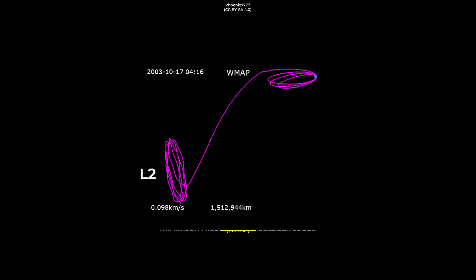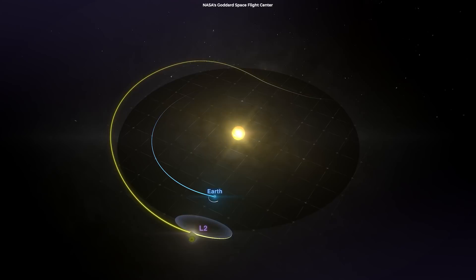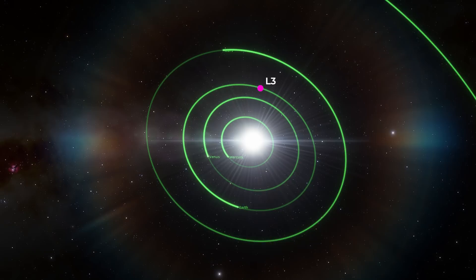The Wilkinson Microwave Anisotropy Probe, WMAP, of NASA is currently at this point, L2, monitoring cosmic background radiation left over from the Big Bang. The James Webb Space Telescope, which was launched recently, is set to move into this region.